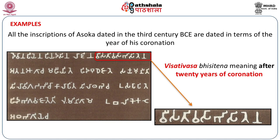All the inscriptions of Ashoka are dated in regnal era. In the famous Rumminde inscription, the term Visativasavisitenam means 'after 20 years of coronation', that is the coronation of Ashoka, that this inscription was written.